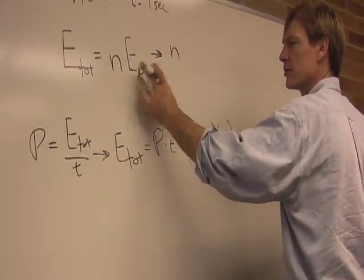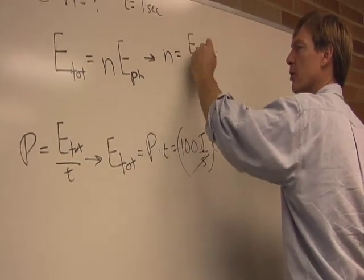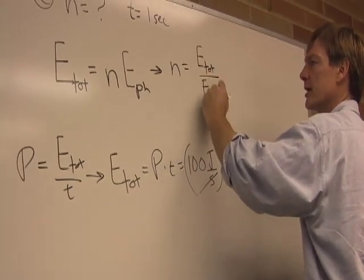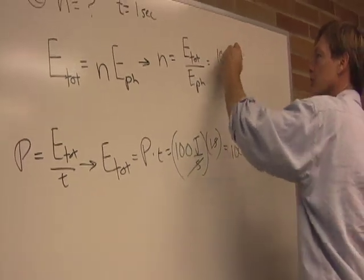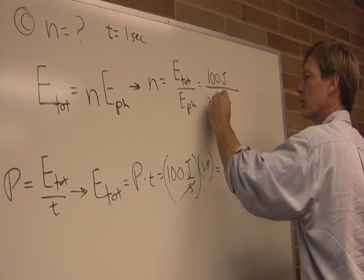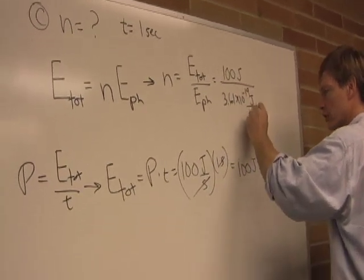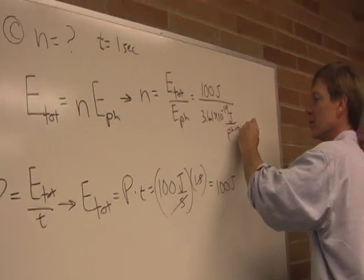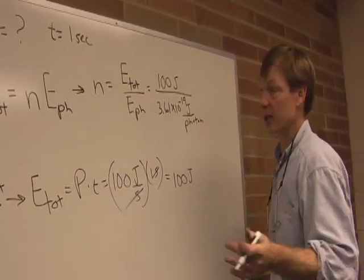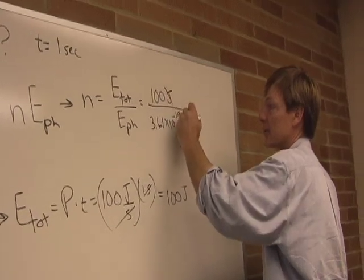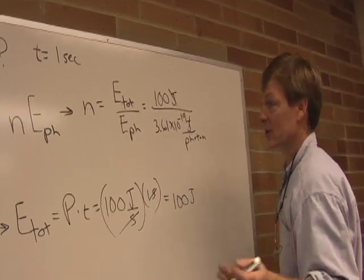So the number of photons, I'll just divide both sides by the energy per photon, is equal to the total energy divided by the energy per photon, which is 100 joules, divided by 3.61 times 10 to the minus 19 joules per photon. You notice I called it joules per photon. You know it's the energy of the photon, so it seems redundant. But this way, when I cancel out the joules, I'll have 1 over 1 over photons. I'll have photons, so I'll get the unit I need.